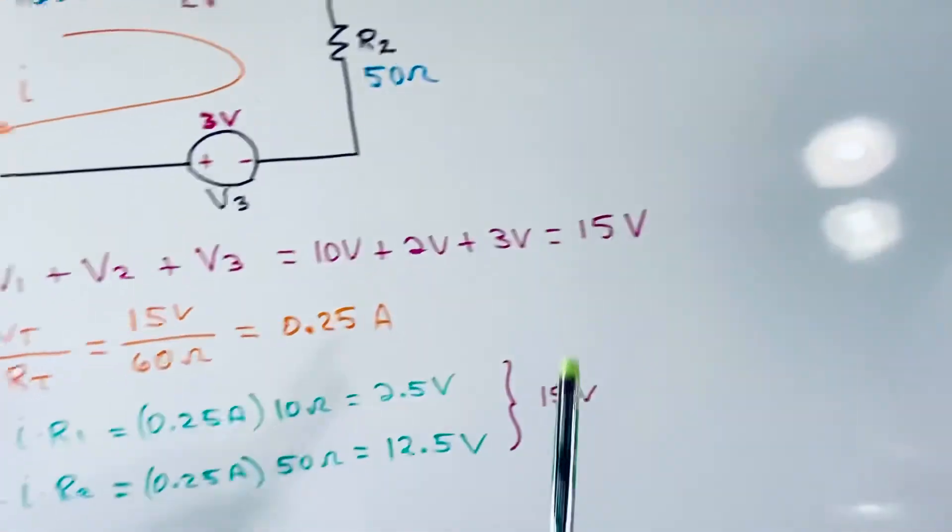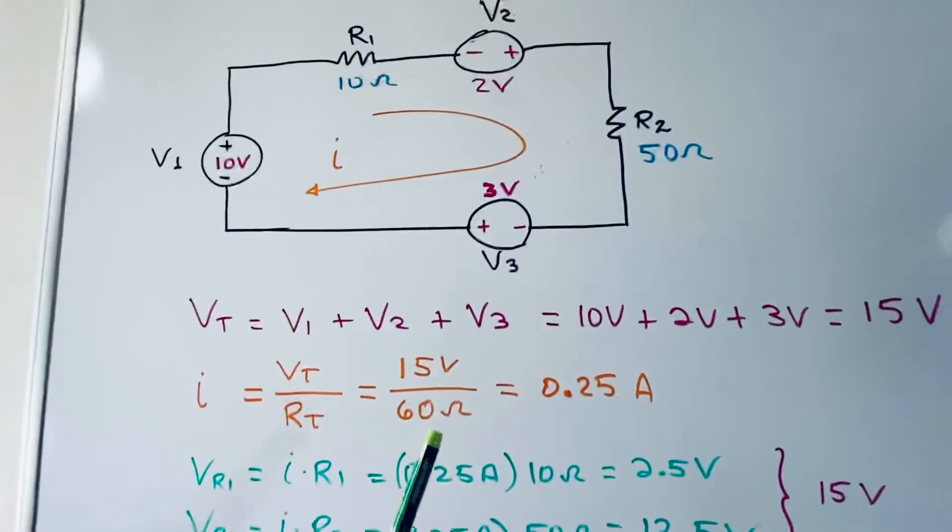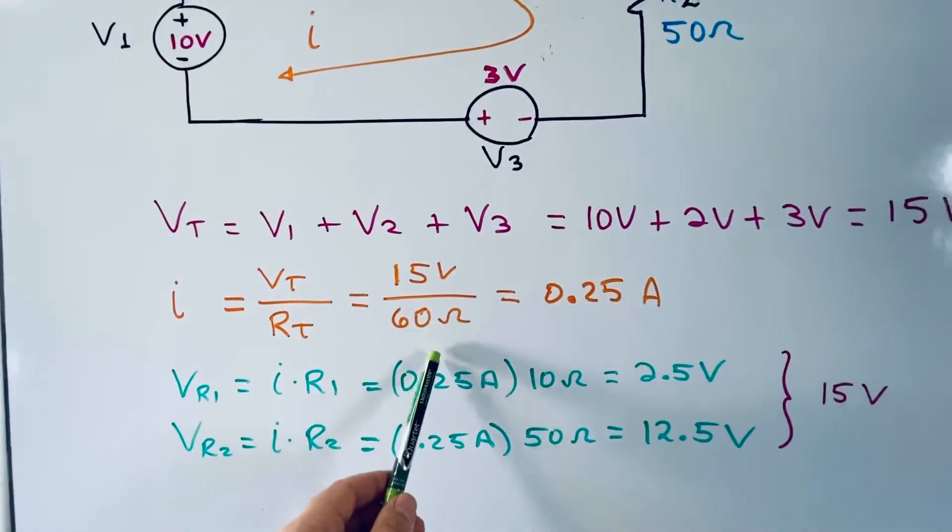And it is 15 volts. The total current for this circuit is 15 divided by the total resistance, and we can see 10 plus 50 is 60 ohms, so we have 0.25 amps.